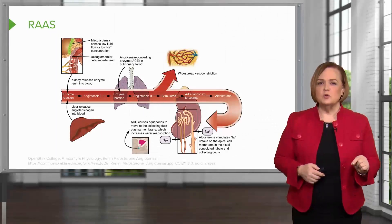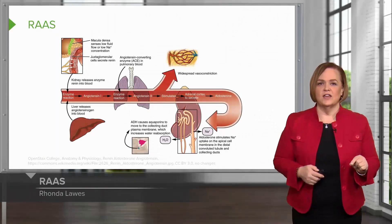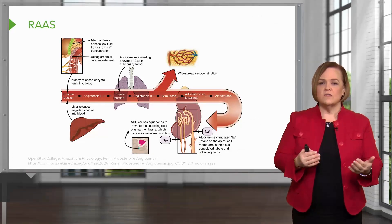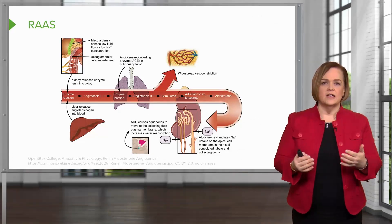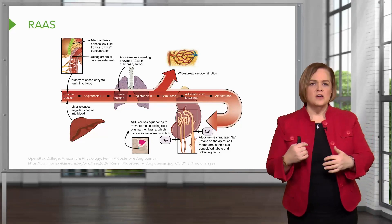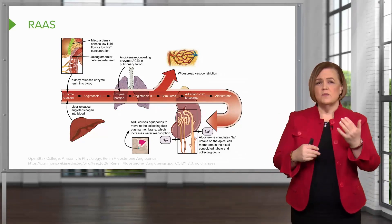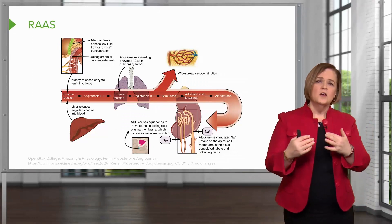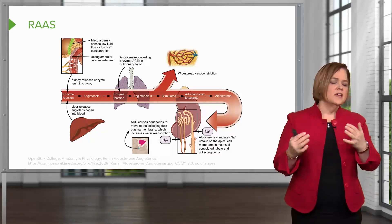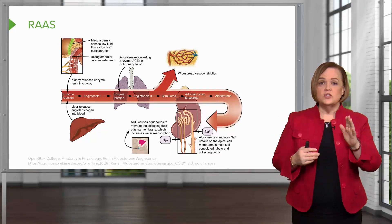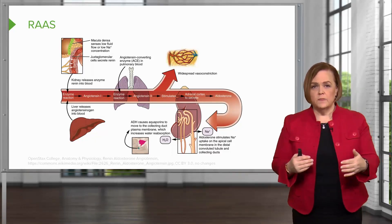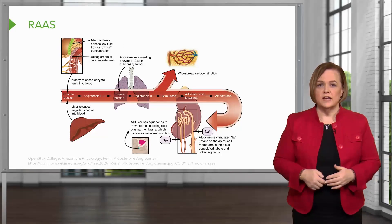You have this really cool diagram in your notes. It shows you where all the players of the RAAS are, what organs they come from — what comes from the liver, what comes from the juxtaglomerular cells, what comes from the lungs, what happens in the capillaries. I want you to pause the video, take a look at it, orient yourself to that picture, and then restart the video when you're ready.